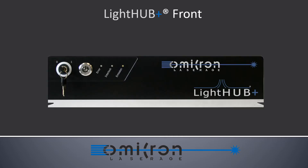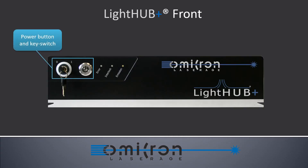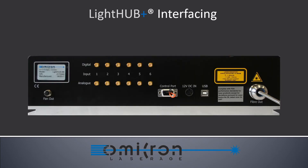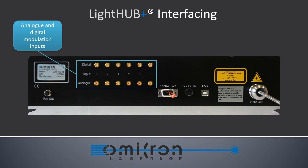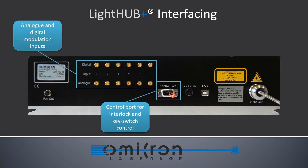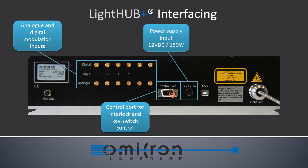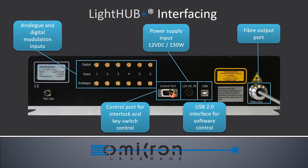At the LightHub Plus front you find the power button and key switch as well as status LEDs. At the back side you find all the interfacing: six digital and analog modulation inputs, a control port which holds interlock and key switch, power supply connector, USB port, the fiber output, and the connector for the optional cooling unit.